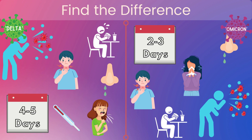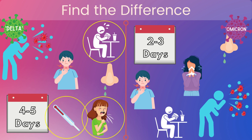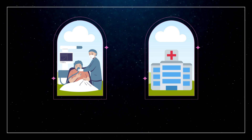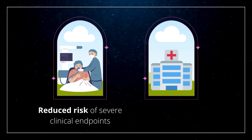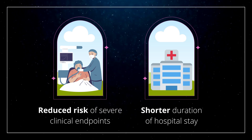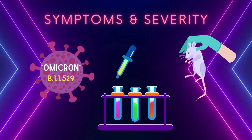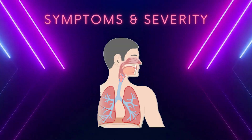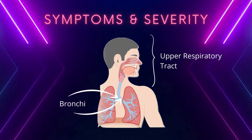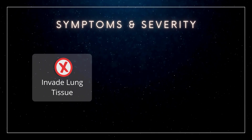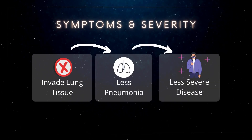However, former distinctive features of the Delta variant — such as fever, cough, and loss of taste or smell — have decreased significantly within Omicron infection. During the time frame where Delta and Omicron variants were both circulating, cases with Omicron infection were associated with reduced risk of severe clinical endpoints and shorter duration of hospital stay. Moreover, symptoms of the Omicron variant tend to be less severe than Delta. Recent research on rodents illustrates that the virus proliferates well in the upper airway and bronchi but poorly in the lungs, meaning Omicron is less likely to invade lung tissue, leading to less pneumonia and subsequently less severe disease.